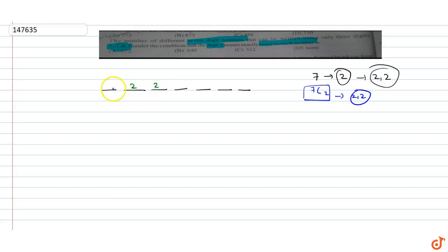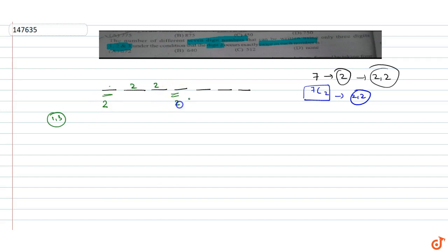अब बाकी 5 places को समझें — हमने इन दोनों को 2 से block किया, तो यह जो बाकी 5 places हैं, इनमें हमें 1 या 3 से substitute करना है। तो इस place के लिए 2 choices हैं, इस के लिए 2, इसके लिए 2, इसके लिए 2, और इसके लिए 2 — total choices: 2 × 2 × 2 × 2 × 2 = 2 to the power 5।